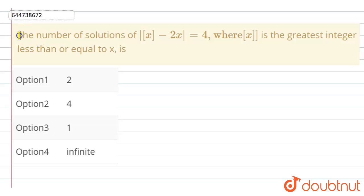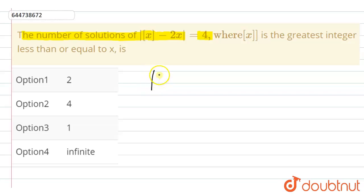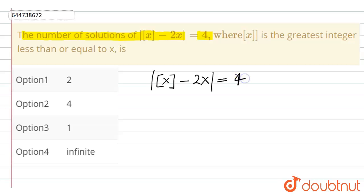The question is: the number of solutions of mod of greatest integer of x minus 2x equal to 4. So we have: mod of greatest integer of x minus 2x is equal to 4.